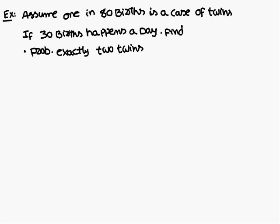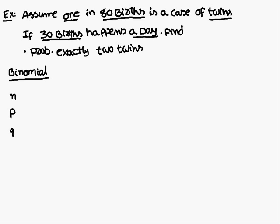Now consider this example: assume one in 80 births is a case of twins. If 30 births happen in a day, find the probability of exactly two twin births. For this problem I will solve it using both the binomial distribution and the Poisson distribution. To solve using the binomial distribution, the values we require are n, p, q, and r.